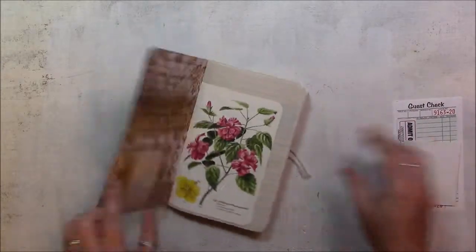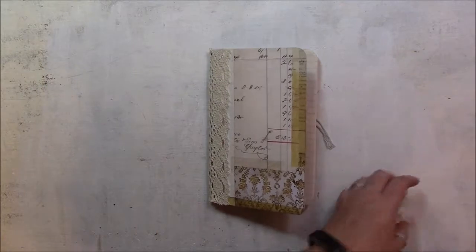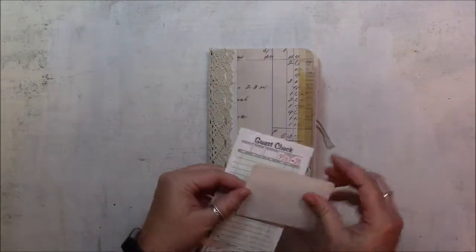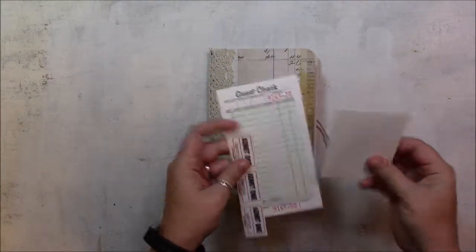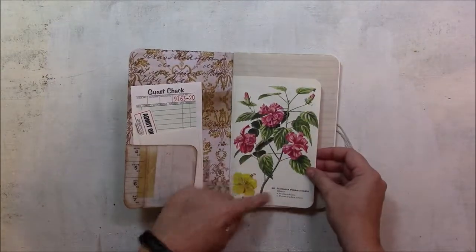In the front there's a little pocket - love this yellow - and I added just a folded piece of paper, some tickets, and the guest check. There's a page from a gardening book or plant book, I'm not sure actually.